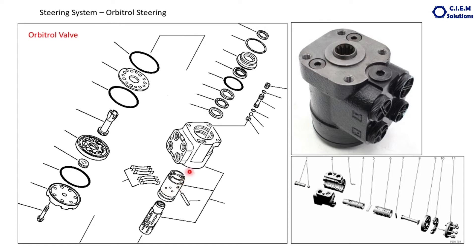Oil coming out of the spool enters these ports, then goes to the girator pump. From there the quantified or metered oil comes back and discharges through one of the ports. There are four ports here: P means pressurized oil coming from the pump, T means oil returning to the tank — the return line — when there is no steering function. The other two lines are one for left side steering and one for right side steering.